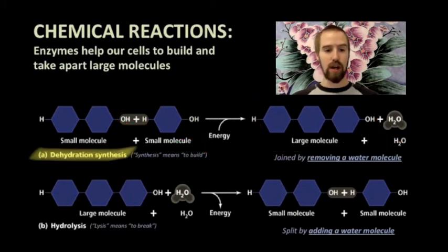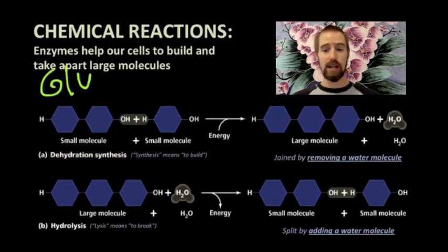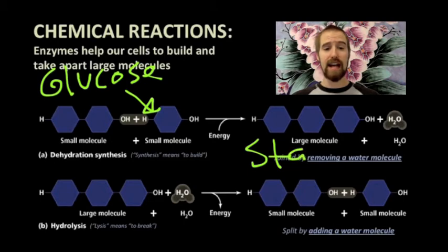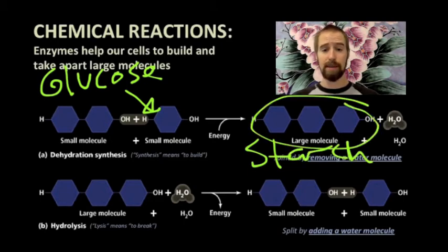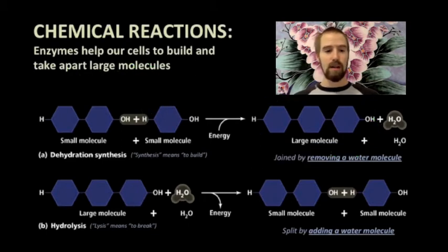Dehydration synthesis is what occurs when combining glucose molecules to make starch or glycogen, when combining nucleotides to make DNA, when combining amino acids to build a polypeptide, and when attaching fatty acid chains to a glycerol molecule to make a lipid. In all cases, smaller pieces are being joined together to make a bigger molecule.